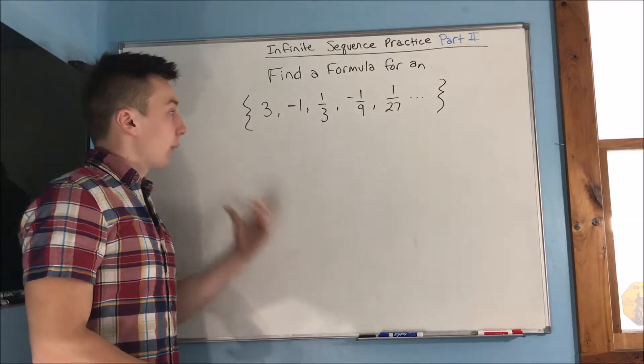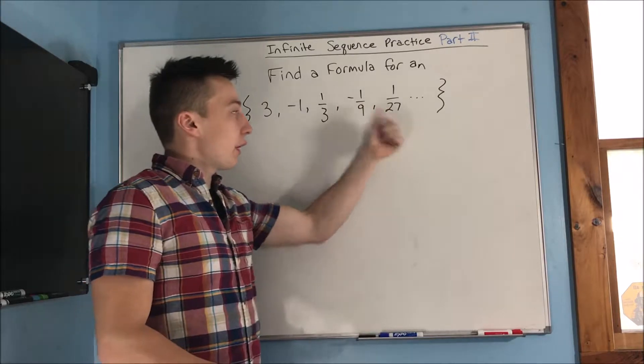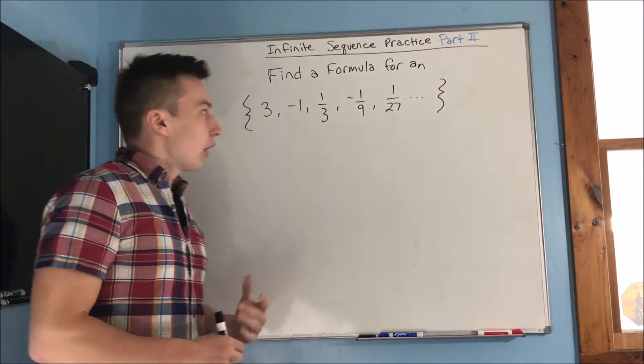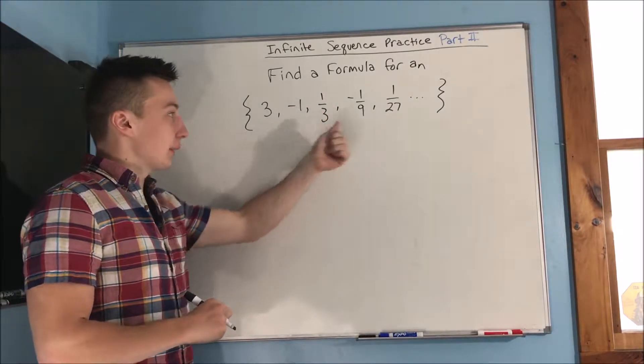What about for this sequence here? We have three, negative one, one-third, negative one ninth, and one twenty-seventh. So first off we see that negative one, that's on the even terms. That's on two and four.